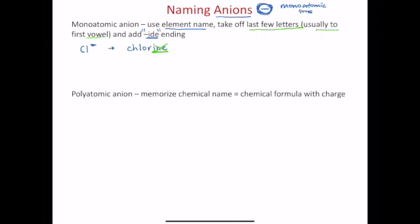Then you're going to replace and add that IDE ending. So this is going to become, keep the C-L-O-R and add IDE, adding the IDE name ending. So this is the chloride ion. An ion, again, is optional, but it does indicate that it's an ion.